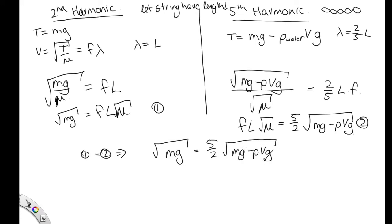So we can cancel out our g's. Now let's square everything to get rid of these square roots. We've got m is equal to 25 on 4, m minus rho v.